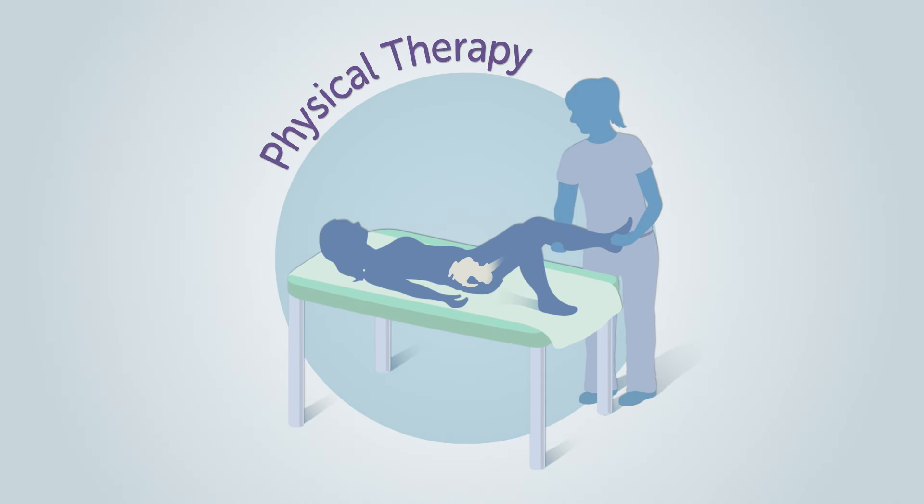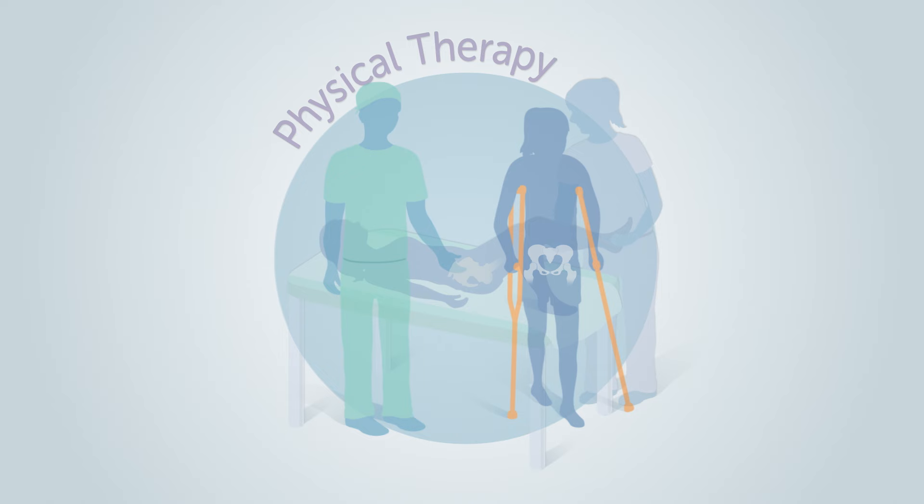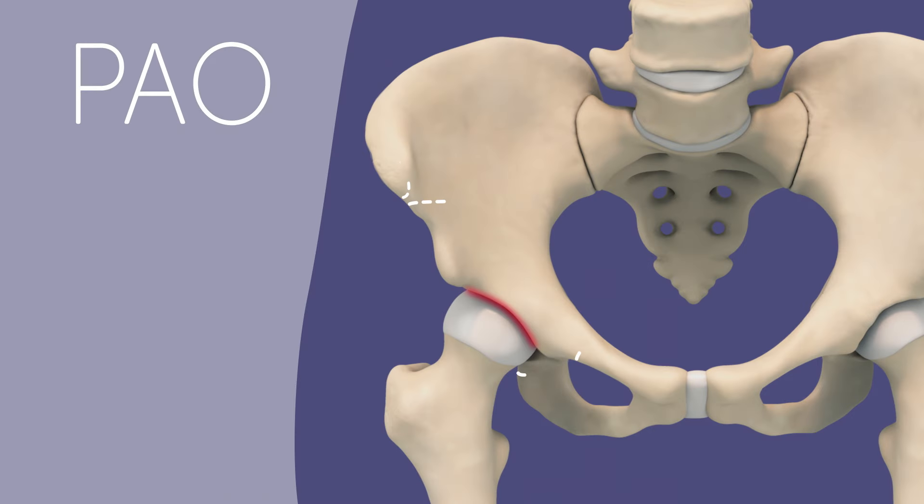If non-surgical treatment such as physical therapy is unsuccessful, surgery may be necessary in order to relieve pain and to prevent arthritis or further hip problems as you age. This procedure is called periacetabular osteotomy or PAO. During a PAO, your surgeon is able to rearrange the hip bone so that it grows back in the right position around the head of the femur.